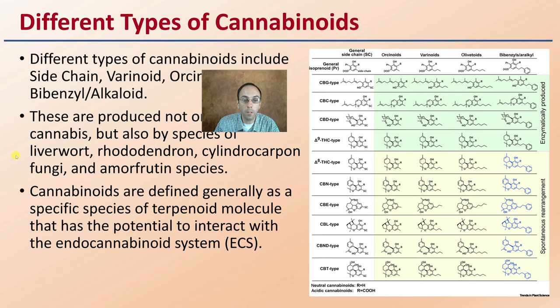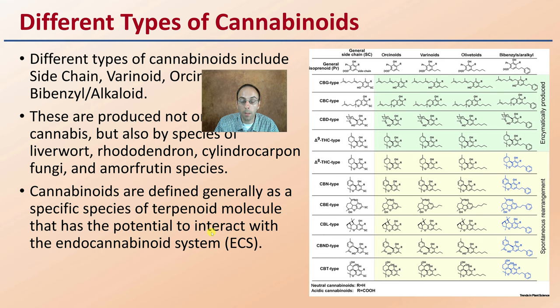Cannabinoids are generally defined as specific species of terpenoid molecules that have the potential to interact with the endocannabinoid system, typically abbreviated ECS.